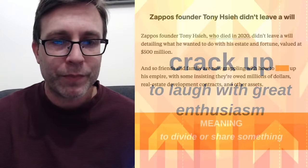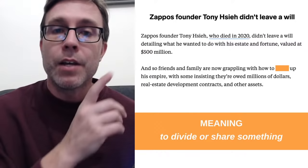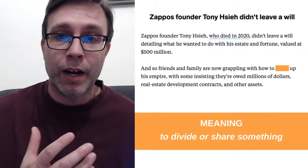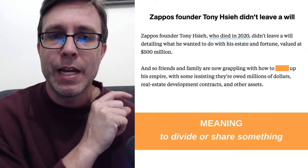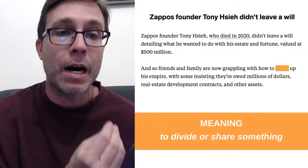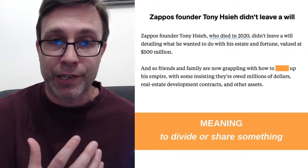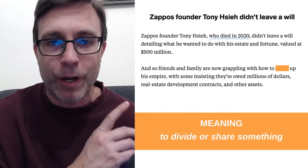The next one is definitely a little more challenging. This phrasal verb is actually taken from an article about the founder of Zappos, who passed away in 2020. He had a fortune of $500 million. The line says his friends and family are now grappling with how to ___ up his empire — meaning to divide and share something. Which verb goes in there? This one is more challenging.